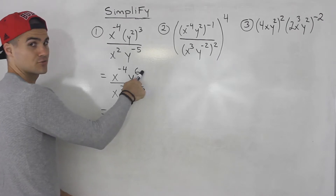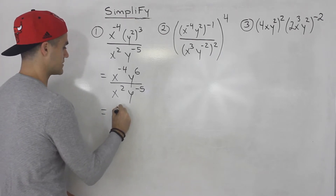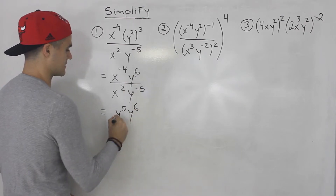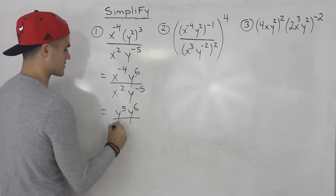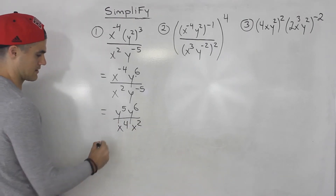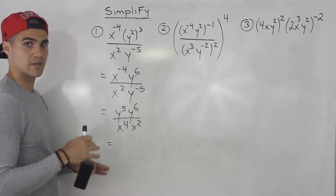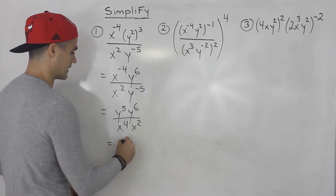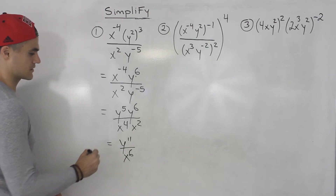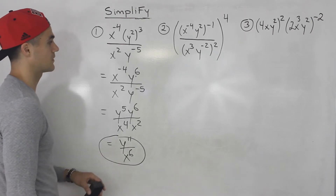So this y to the negative five, I'm going to bring up to the numerator, and this x to the negative four I'm going to bring down to the denominator. So I'll have y to the positive five brought up, y to the sixth still up there, and then x to the four and x to the two in the denominator. Now we're multiplying exponents with the same base, so we add: five plus six is eleven, and that gives us x to the power of six in the denominator. These are different bases so we can't simplify further. That's the final answer for number one.